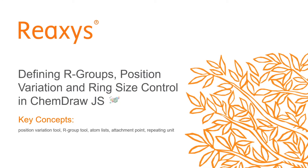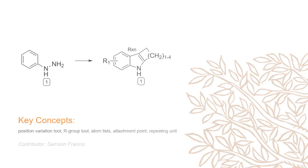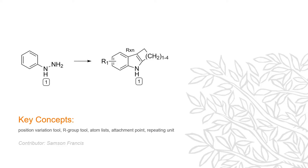In this example, we'll define R-groups, position variation, and ring size controls with ChemDraw.js in Reaxis. Using the Indole system from a previous example, we'll define a more advanced system that includes R-groups, ring size variation, and of course the make or break rules.